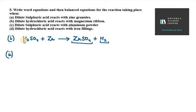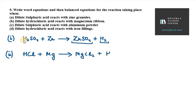The second reaction is dilute hydrochloric acid, HCl, reacting with magnesium ribbon. The result is magnesium chloride plus hydrogen gas is released.